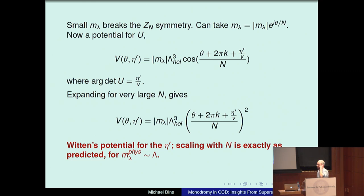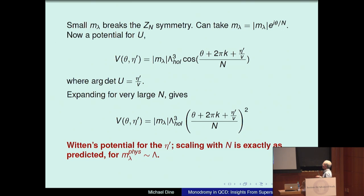Small m_lambda breaks the Z_N symmetry. Writing m_lambda as absolute m_lambda times e to the i theta over N, we now have a potential V(theta, eta prime) going like m_lambda times lambda-holomorphic cubed times cosine of theta plus 2 pi k plus eta prime over V divided by N. Arg det U, the thing that appears in this early literature, is eta prime over V. Expanding for very large N, we write down the potential for the eta prime as anticipated, with exactly the scaling dependence anticipated for N, for m_lambda physical of order lambda QCD.